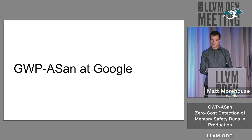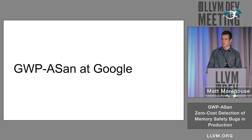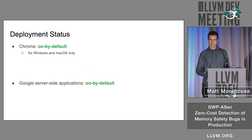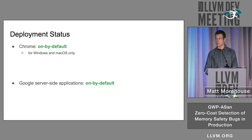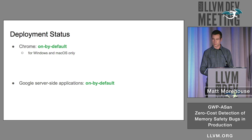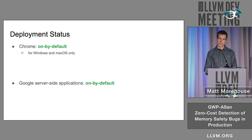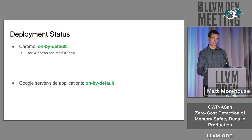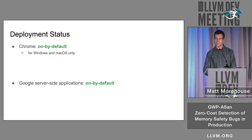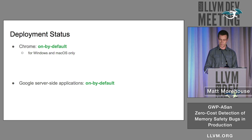GWP-ASAN has been deployed at Google for some time now with pretty good results. It's on by default in both Chrome and all Google server-side applications. So if you're Googling something today, using Gmail, or if you have Chrome on your Mac or Windows machine, you're already using GWP-ASAN.